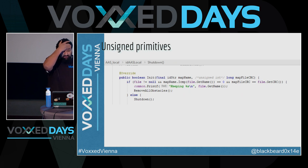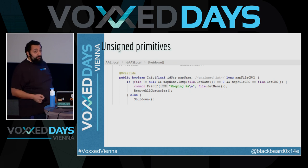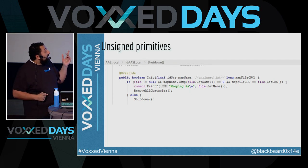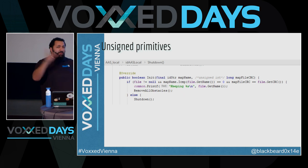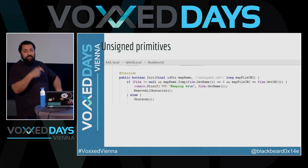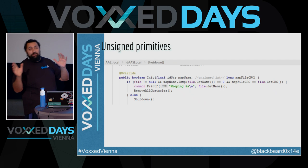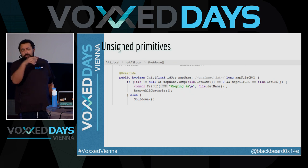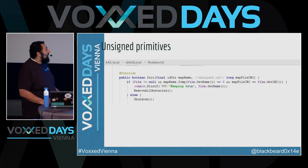The next one: unsigned primitives. Java doesn't have other unsigned primitives — it has char, which is unsigned, but if you do math with char then something is wrong with you. Java doesn't have the unsigned keyword that C++ and other languages have. Some languages have a uint — unsigned int — which is an integer with only positive range: double the range, but shifted. So instead of 0 to 2^31 minus 1, it's the full range. Java doesn't have that.